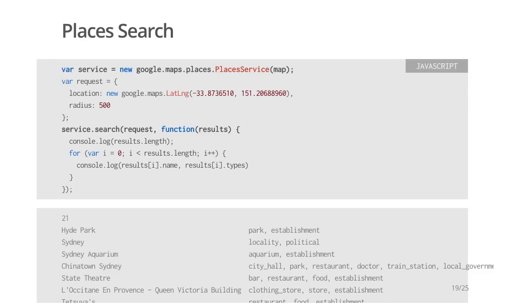Places search is also available from the JavaScript API. Simply create a places service object, then call the search function. You'll need to pass in a callback function that will be called with the place results. In this example, we simply print the name and types of each place that's returned. It's also possible to restrict your search by category using the types parameter — we support more than 130 types, including bar, restaurant, lodging, shop and many more. You can see the complete list in our places reference docs.